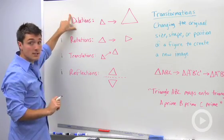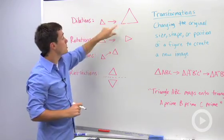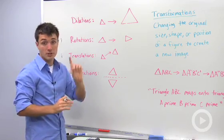The reason why dilations are not isometries is because you're changing the size of the shape. So these two are never going to be congruent when you have a dilation, unless your scale factor is equal to one.